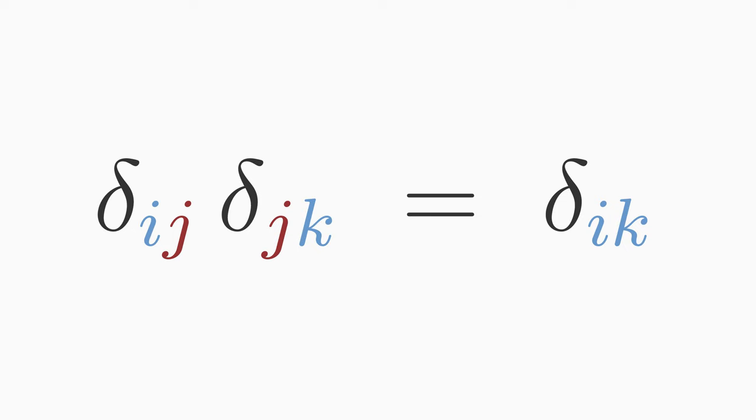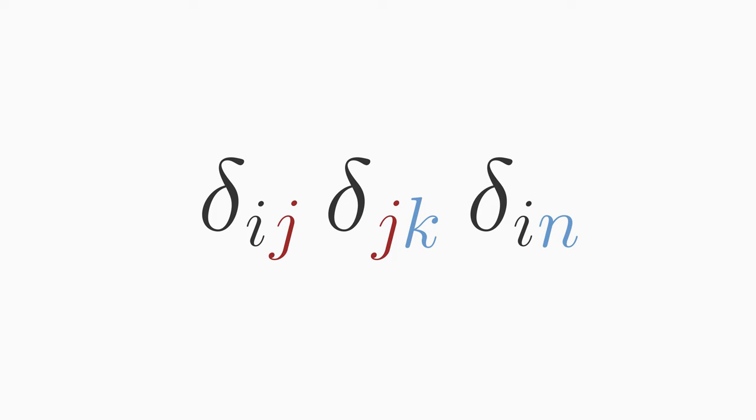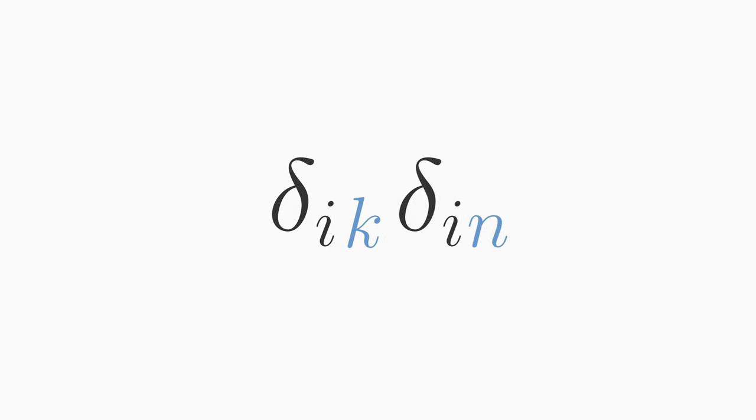Let's do an example to understand it better. Consider delta km times delta mn. The summation index here is m, so you can eliminate it by contracting it, and you get delta kn. Next example. Delta ij times delta kj times delta in. Here you have two summation indices i and j. So in principle you can eliminate both of them. From the first rule you know that Kronecker delta is symmetric. So you can swap k and j in delta kj, and then contract the index j. You get delta ik times delta in. And then you contract the summation index i. The simplified result is delta kn.